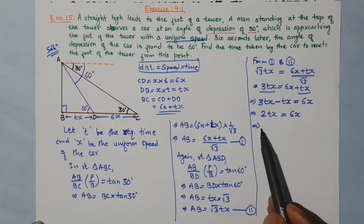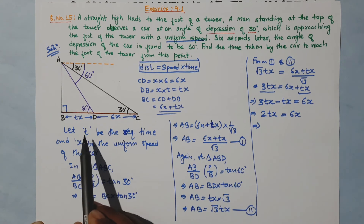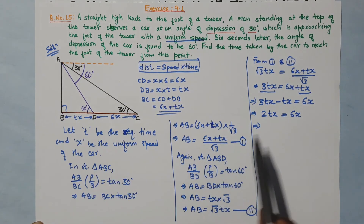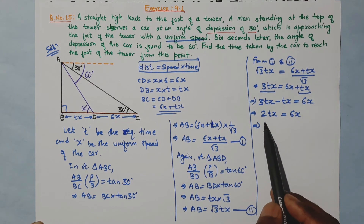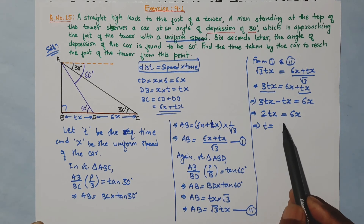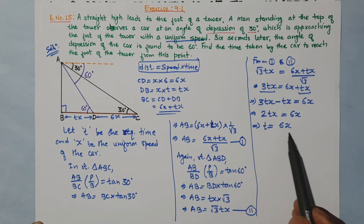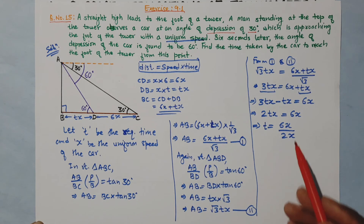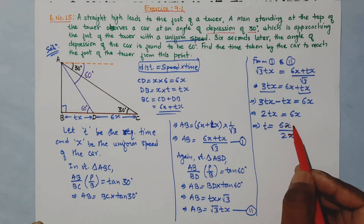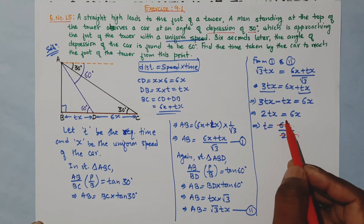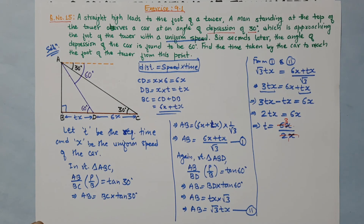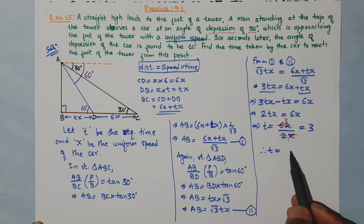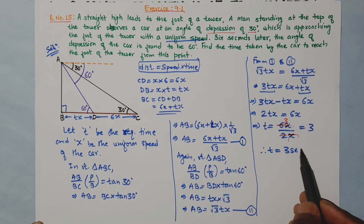We cancel x from both sides: 2T equals 6, so T equals 3. Therefore, the required time is 3 seconds.